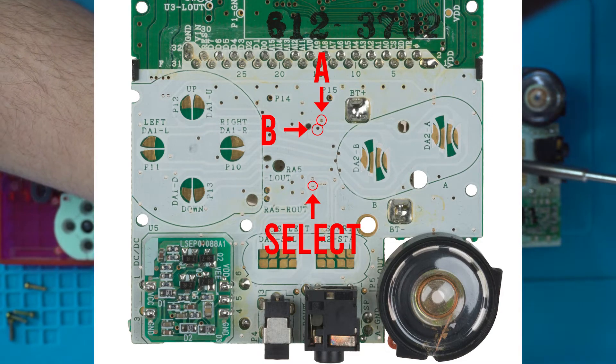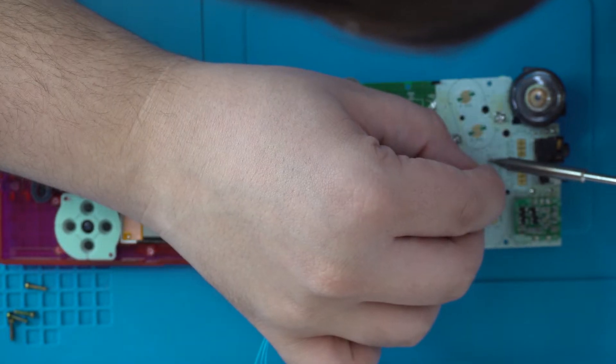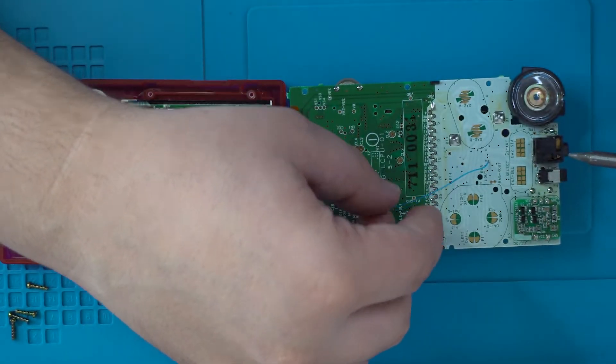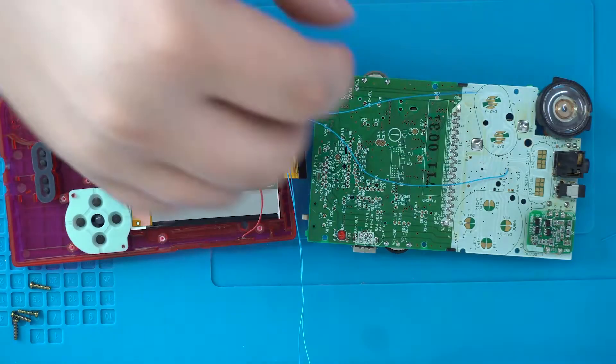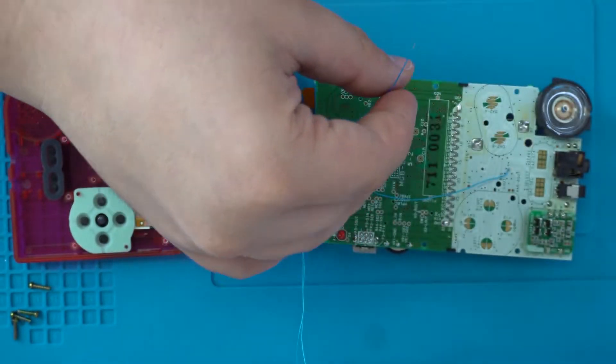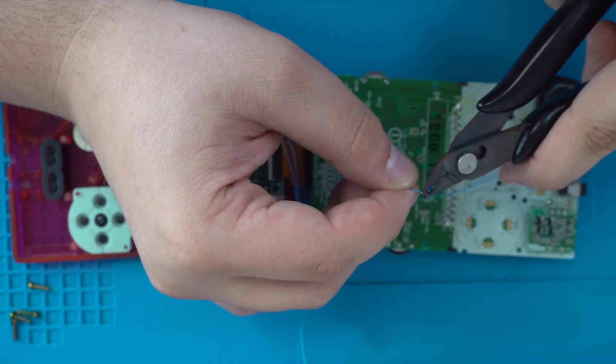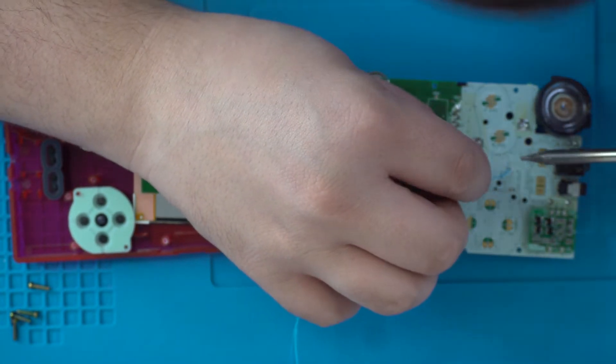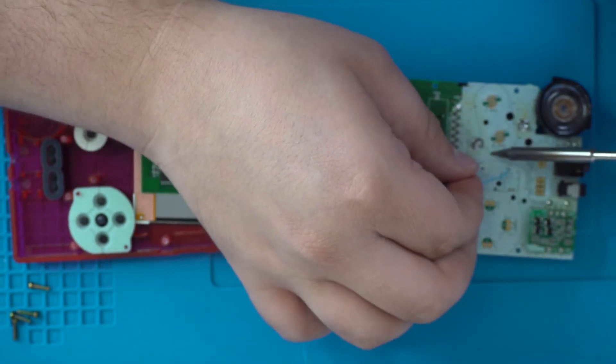The first thing we'll do is pre-tin our wires so that they have some solder on them before inserting them into the vias and heating up the wires, allowing the solder to spread. Make sure the exposed leads of your wire aren't too long so that they don't short out on anything else in the case.